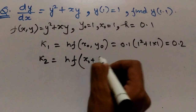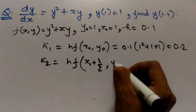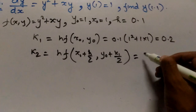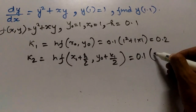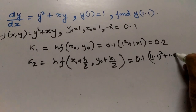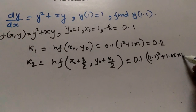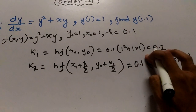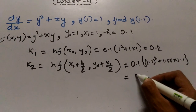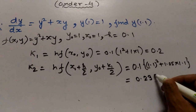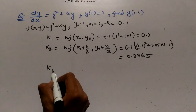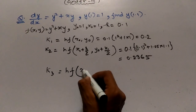k2 equals 0.1 into (1.1² + 1.05 × 1.1), which gives k2 equals 0.2365.